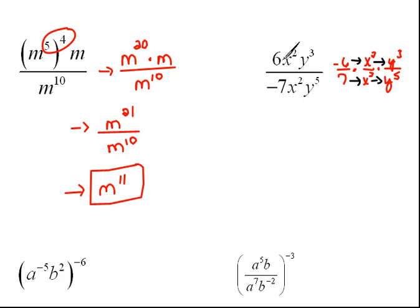So doing those one at a time, let's look at our numbers first. We have 6 over negative 7. Well, there's not much that can be done there. The only thing I can do is move that negative out either to the top or out to the side to make it look a little bit better.